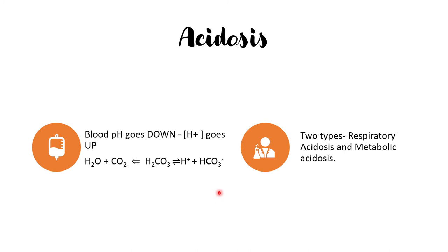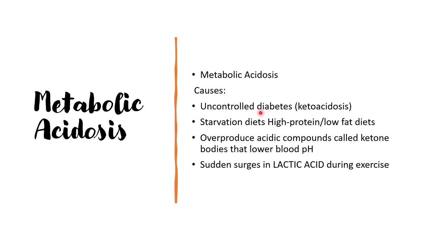Acidosis is characterized by a decrease in blood pH and here the equilibrium shifts to the left. Acidosis can occur due to two main reasons: respiratory acidosis or metabolic acidosis. Metabolic acidosis is caused by the generation of protons due to metabolic activities, but other conditions also include uncontrolled diabetes, starvation diet, high protein or low fat diets, and overproduction of acidic compounds like ketone bodies which lower the blood pH.